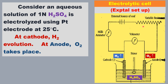This is called a variable resistor. It is used to vary the applied potential from 0 to 2 volts — to vary the applied potential to the electrolytic cell. A voltmeter is used to measure the potential applied to the electrolytic cell, and an ammeter is used to measure the current passed through the circuit.